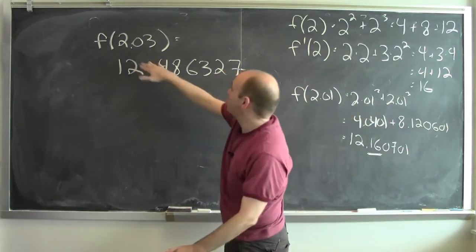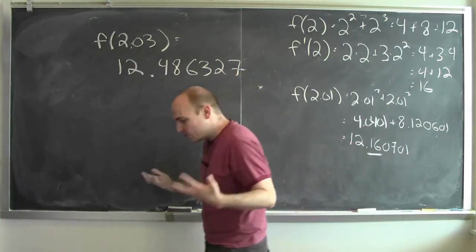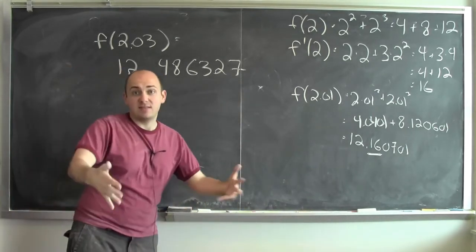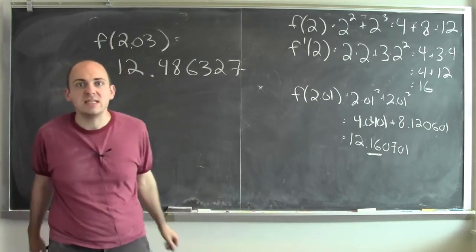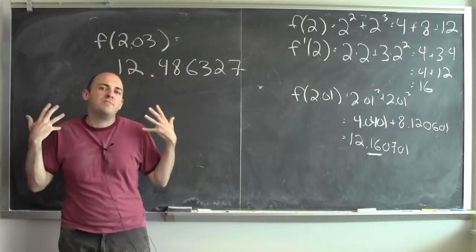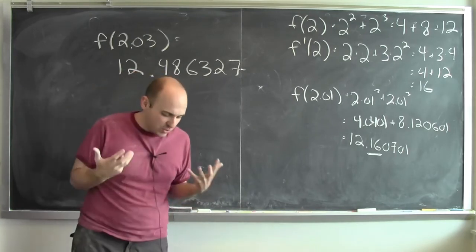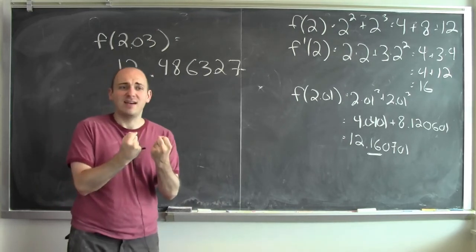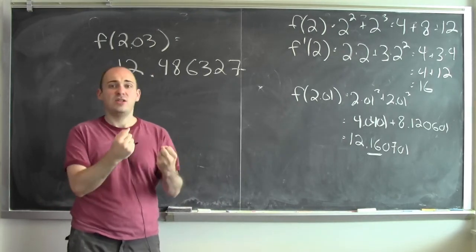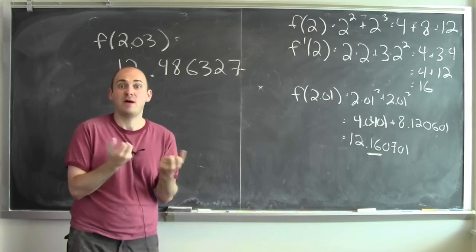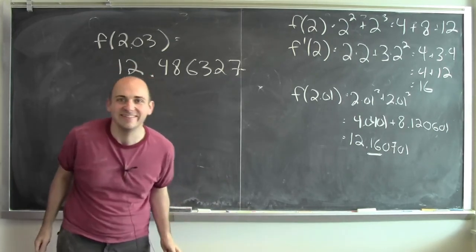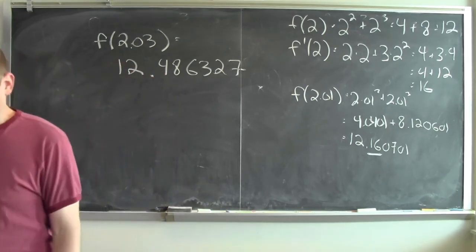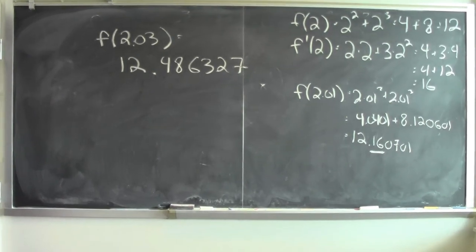So hopefully this gives you some idea of not just how to calculate the derivative of a sum as the sum of the derivatives, provided the derivatives exist, but also what the derivative means. The derivative is measuring how change in the input changes the output. If you add together two things and see how those two things change, the sum is going to change by about the sum of how those two things change — and that's exactly what the derivative of the sum is: the sum of the derivatives.